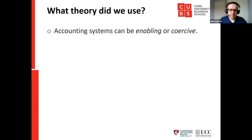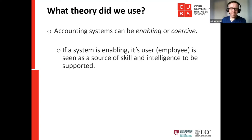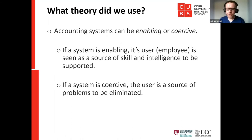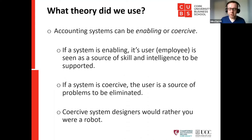The theory we used was that accounting systems can be either enabling or coercive. If you describe a system as enabling, you see users and employees as a source of skill and intelligence. If a system is coercive, the user is seen as a source of problems to be eliminated — coercive system designers would rather you were a robot. It's quite straightforward to identify whether a performance measurement system is enabling or coercive, and I'll explain that now.